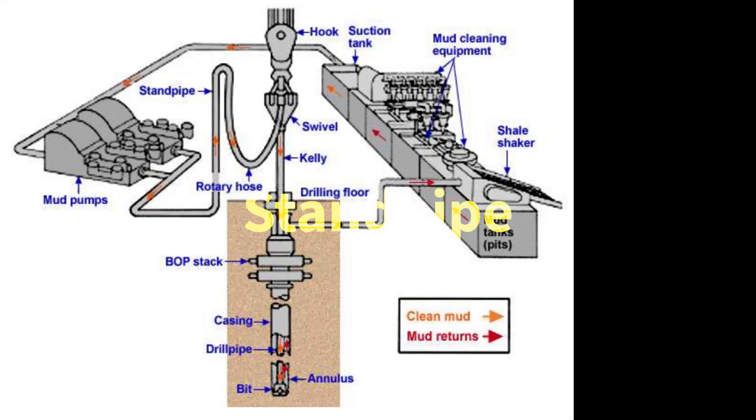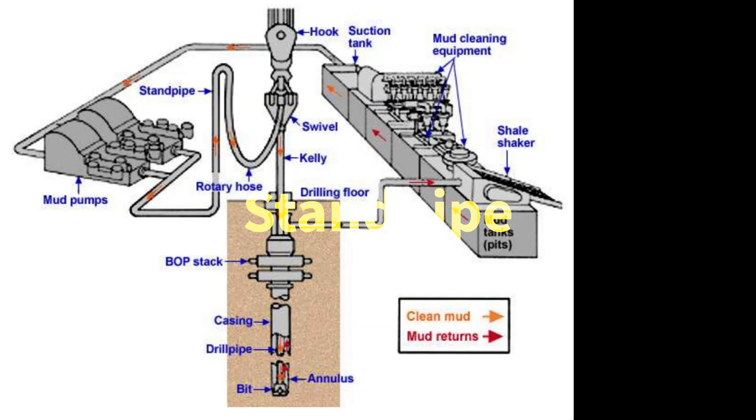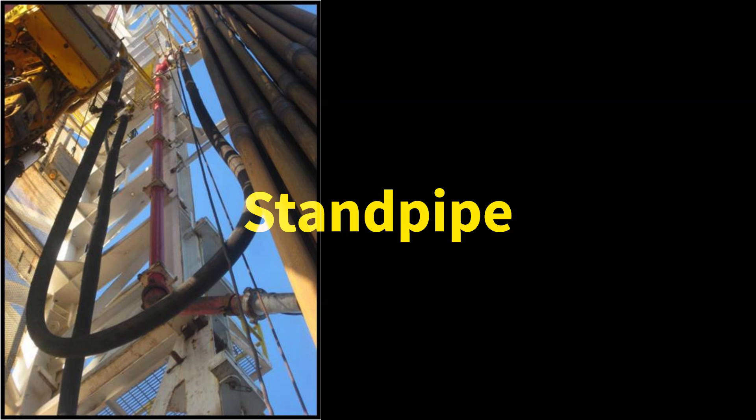The standpipe is a vertical pipe that transports the drilling fluid from the mud pumps to the kelly hose. It is typically 40 feet long and mounted near one of the supporting legs of the derrick.